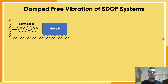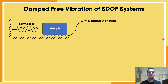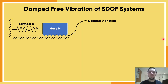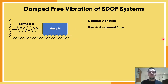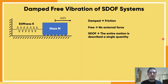So what is different between this video and the previous one? In the previous one we said it was undamped — no friction, no air resistance, nothing to stop our motion. Today we're going to include some damping and see what happens. We are still in free vibration, so no external force, and we are still considering just a single degree of freedom, so everything is described by just a single number.